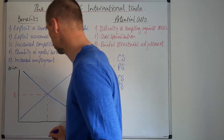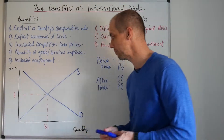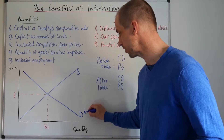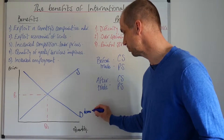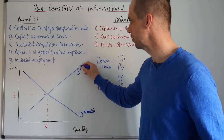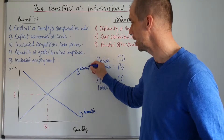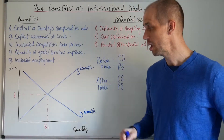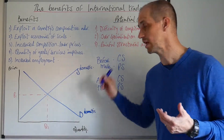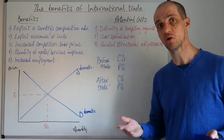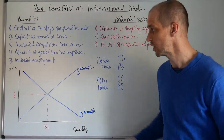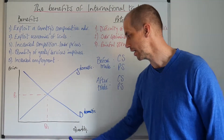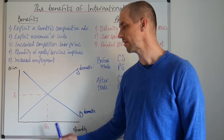You can see that I've just drawn out a very straightforward demand and supply diagram. We're going to consider this to be the UK market, with domestic supply and domestic demand. This is very much a scenario playing through which we may see if the UK did not engage in international trade. We can see that we end up with a price of P1 and an equilibrium quantity demanded level of Q1.